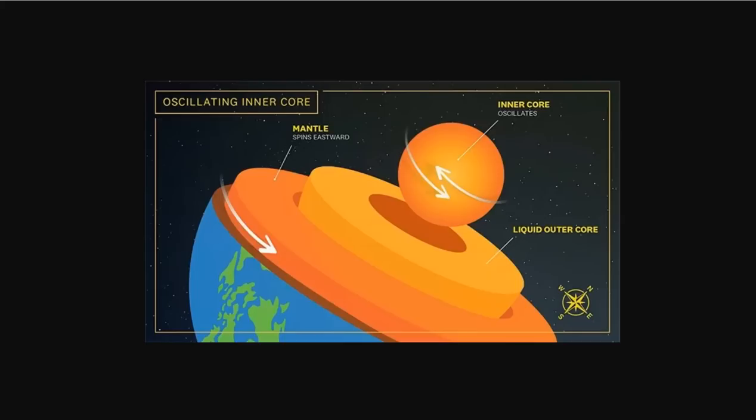Research published in 1996 was the first to propose that the inner core rotates faster than the rest of the planet, also known as super-rotation, at roughly one degree per year. Subsequent findings from Vidal reinforce the idea that the inner core super-rotates, albeit at a slower rate.